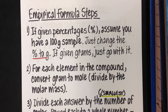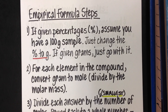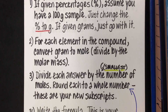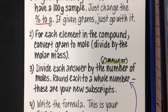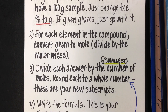Step two: for each element in the compound, convert grams to moles. We already know how to do this — divide by the molar mass from the periodic table. If you need a review on grams to moles, there is a tutorial on YouTube for that. Step three: divide each answer by the smallest number of moles. Once you have all your mole values, find the smallest and divide every answer by that number. That will be easy once you see me do it.